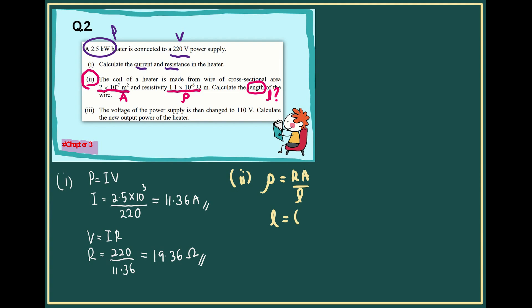R is equal to 19.36, A is 2 times 10 to the minus 7, and our rho is equal to 1.1 times 10 to the minus 6 ohm meter.